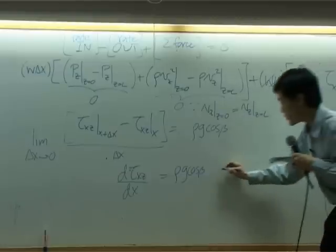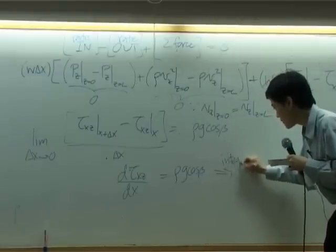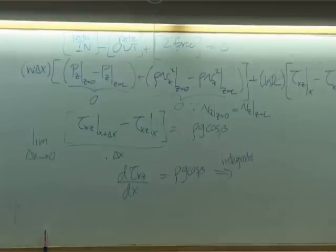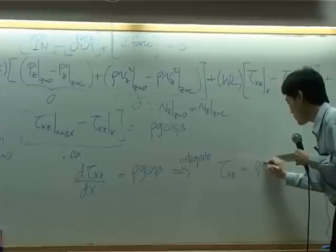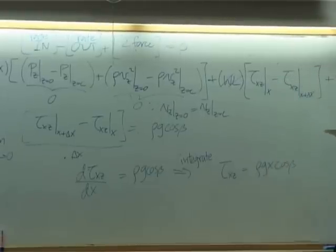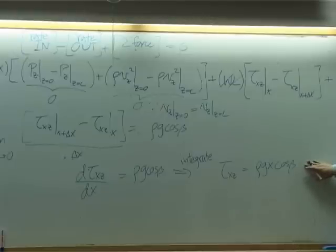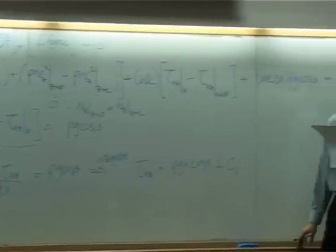From this equation, if you integrate, you get tau xz equal to rho G x cosine beta. Right? Is there anything wrong with this equation? Yes, something is missing. Constant is missing, because we do without limit. So by doing that, you need to add one constant, integration constant.